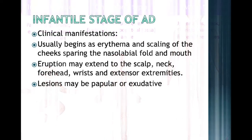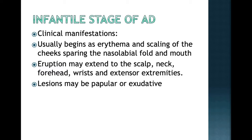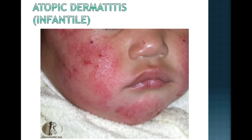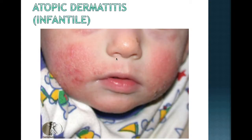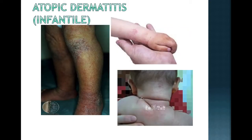Here are some photos of infantile stage atopic dermatitis. Please note the sparing of the nasolabial folds for lesions on the face in the infantile type. All the rashes are on the other parts of the face, and lesions are also seen on the extensor aspects of the extremities.